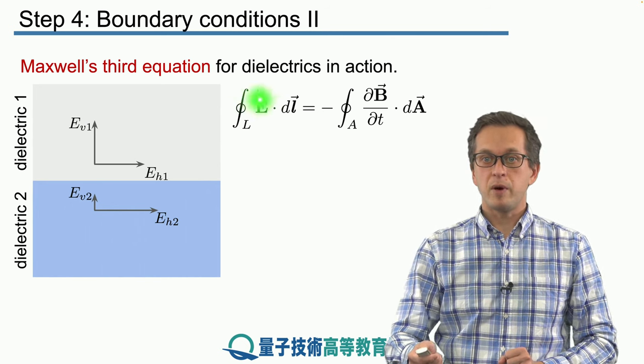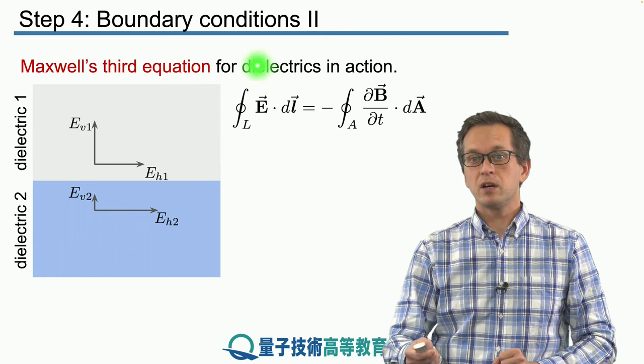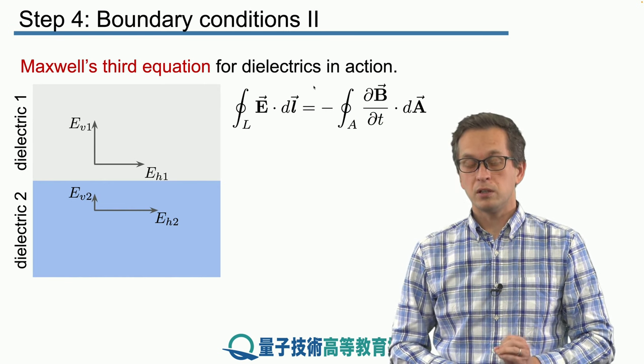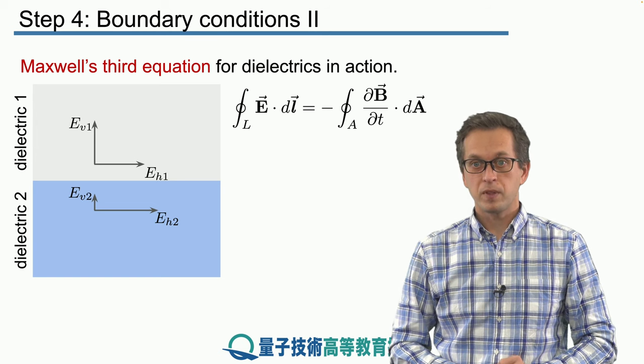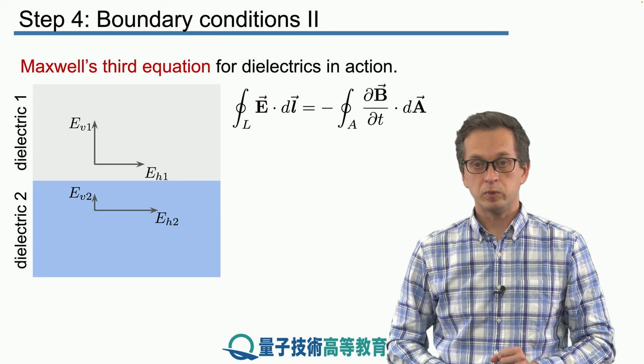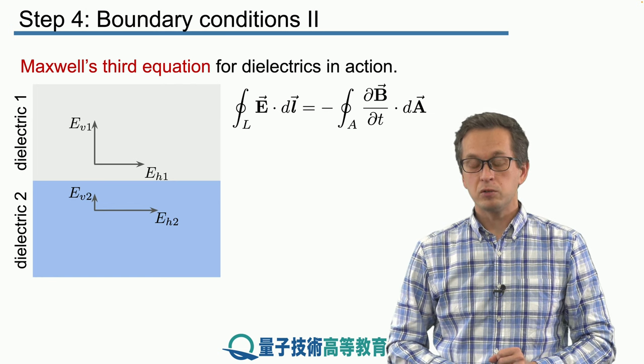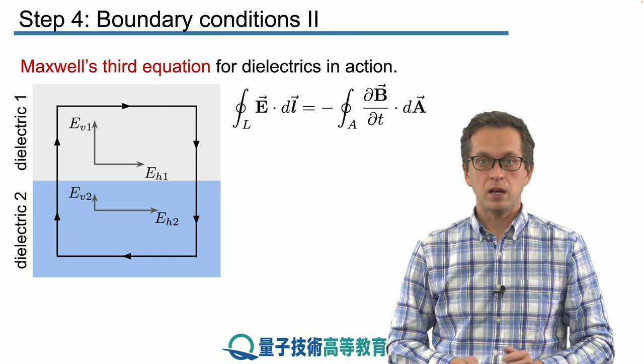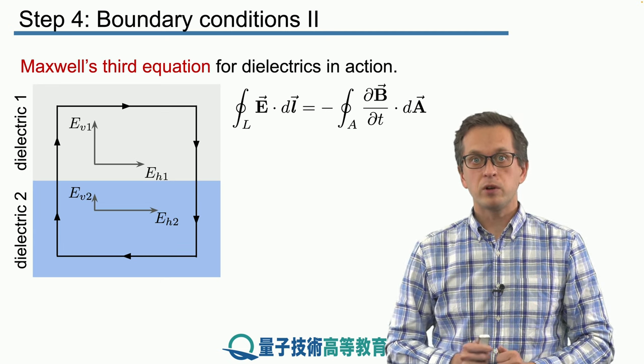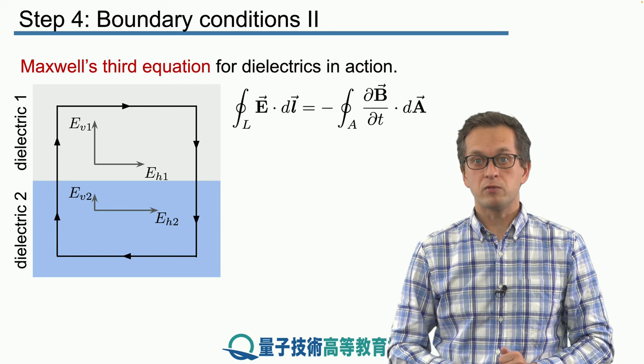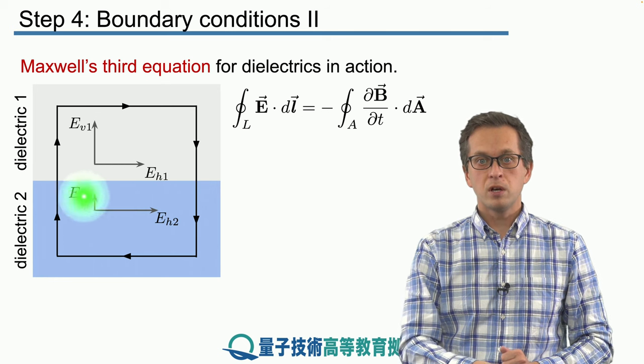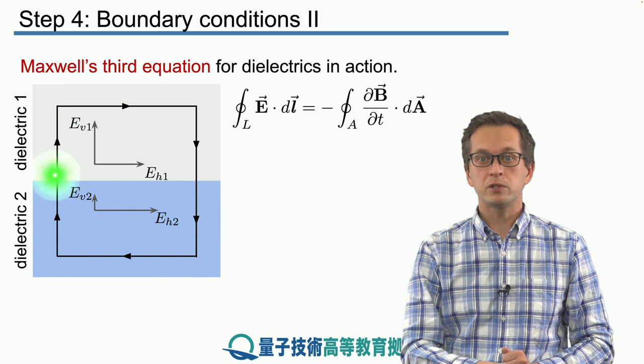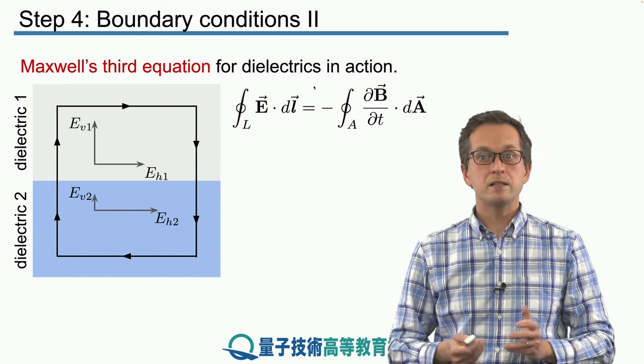Maxwell's third equation tells us about the line integral of the electric field over a closed loop and how it's related to the negative of the change with time of the magnetic flux through the surface enclosed by this loop. Since we are talking about line integrals, the appropriate thing to do now is to draw a loop. It would work for any closed loop, but we're going to make things simple and consider this rectangular loop. We're going to walk around this loop in this following direction and sum all the contributions of the electric field components and see what we get.